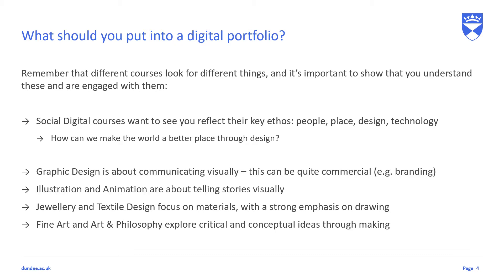Social digital courses — which include product design, digital interaction design and interior and environmental design at the University of Dundee — want to see you reflect their key ethos: people, place, design and technology. These courses are fundamentally asking questions like how can we make the world a better place through design. Graphic design is about communicating visually, which can be quite commercial and can include branding. Illustration and animation are about telling stories visually. Jewellery and textile design focus on materials with a strong emphasis on drawing, and fine art and art and philosophy explore critical and conceptual ideas through making.